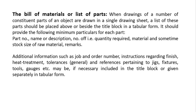The bill of materials, or list of parts, is the list of parts drawn on a single sheet. When drawings of a number of constituent parts of an object are drawn in a single drawing sheet, a list of these parts should be placed above or beside the title block in tabular form. It should provide the following minimum particulars for each part: part number, name or description, number of quantities required, material, sometimes the stock size of raw material, and remarks.